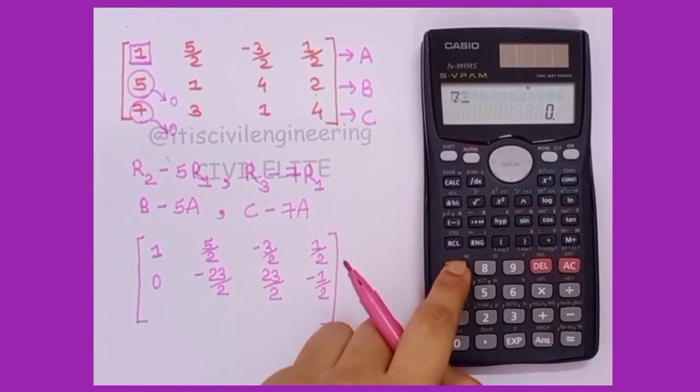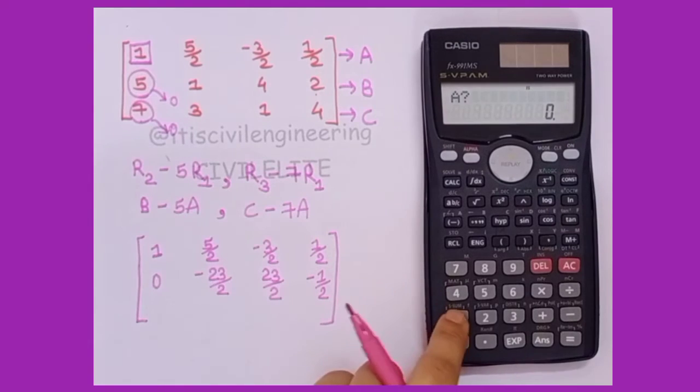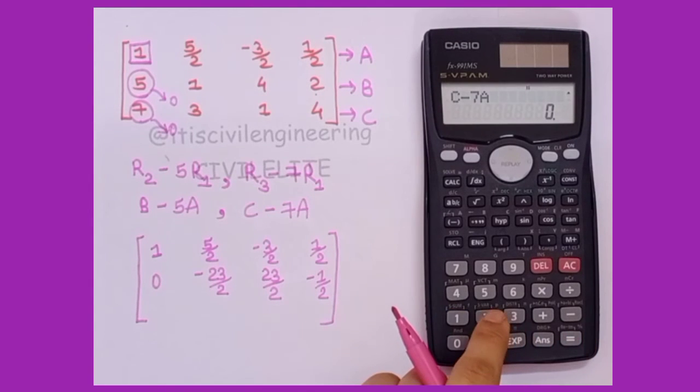Now the value of c is 7, again equal to, and the value of a is 1. Again we'll press equal to. We got our first value which is 0.